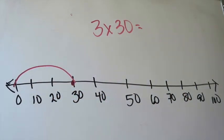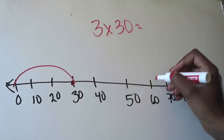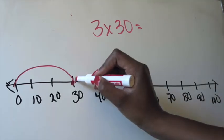Next jump. This is my second jump out of the three, 10, 20, 30. So I'm going to land on 60 for that second jump.